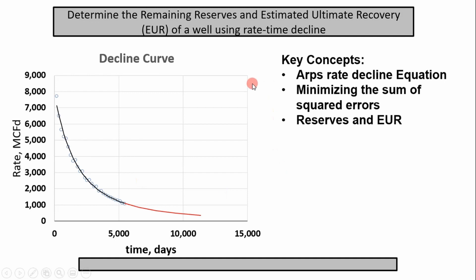The key concepts to think about are the ARPS rate decline equation — the most fundamental equation of decline curve analysis, with many more complicated interpretations built off of it. Also important is minimizing the sum of squared errors to fit our curve, understanding what reserves are (what is left to produce from a well considering the economic limit), and estimated ultimate recovery, which is how much gas you produce over the life of a well.